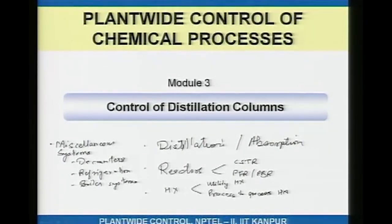These are the individual units that are quite common in a chemical process. The control of these individual units is what we will cover over the next 15 to 20 lectures. Once we have looked at these individual units, we will then consider control of a whole complex plant where all these units are interconnected and we also have material recycle and/or energy recycle and heat integration.